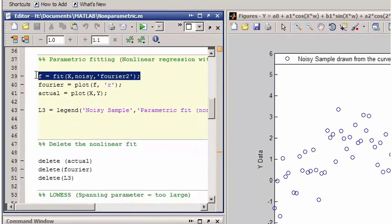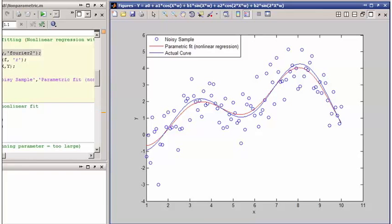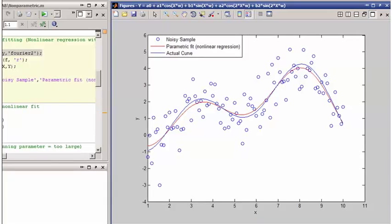If you knew this information in advance, you could choose an appropriate equation for a nonlinear regression. This technique is often referred to as parametric fitting because you assume a specific parametric relationship between your variables.